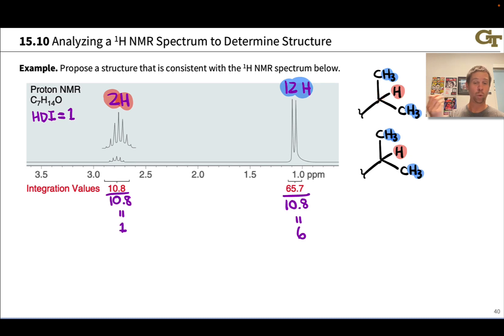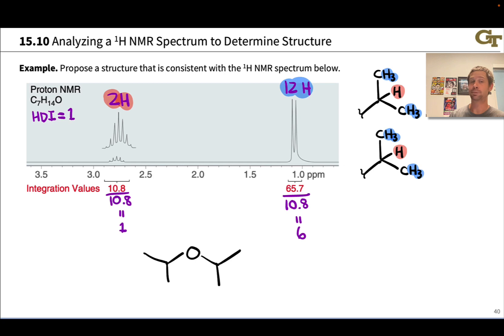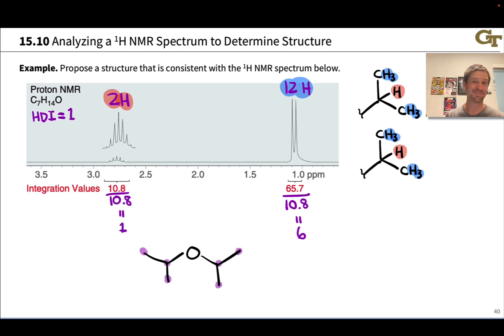This chemical shift of about 2.75 is pretty deshielded, suggesting an electronegative functional group — something to do with the oxygen — in the vicinity of these carbons. One idea might be to link up the isopropyl groups via an oxygen, creating diisopropyl ether. The problem is this doesn't match the molecular formula — it's only got six carbons, it's not C7. So we can rule that out.